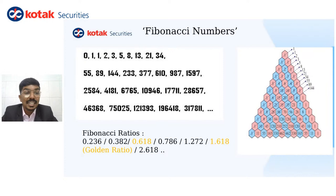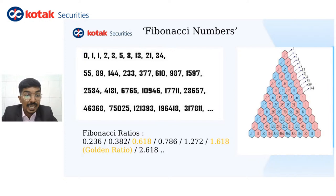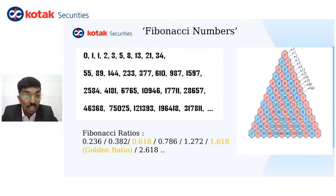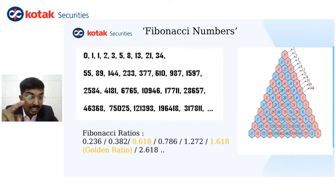Speaking about how these numbers are different from normal numbers — the normal numbers are 1, 2, 3, 4, 5. Fibonacci Numbers are derived from the sum of two numbers. Like, 1 plus 1 is 2, 2 plus 1 is 3, 3 plus 2 is 5. So 4 is not a Fibonacci number. The sequence is 1, 2, 3, 5, 8 — the sum of two numbers gives you the third number, and so on till infinity.